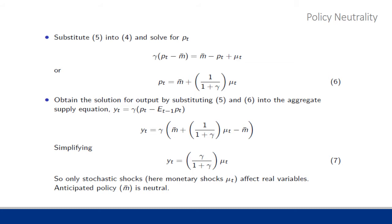If we substitute our solution for the expected price — EP_T equal to M-bar — into our reduced form, which is equation four, we have that gamma times (P_T minus M-bar) — where M-bar has replaced expected P_T — is equal to the right-hand side of the reduced form: M-bar minus P_T plus mu_T. Now if we bring the P's onto the left-hand side and the M's onto the right-hand side, we can solve for P. Our solution for the price is P_T equal to M-bar plus (1 / (1 + gamma)) times mu_T.